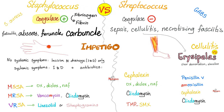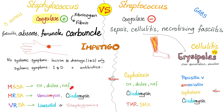Recall the distinction: coagulase-positive Staph aureus causes localized infections — folliculitis, abscess, furuncle, carbuncle — versus infections that spread like sepsis, cellulitis, necrotizing fasciitis, and sometimes erysipelas. Treatment: always incise and drain the abscess. If methicillin-sensitive, give ox, clox, diclox, or nafcillin.